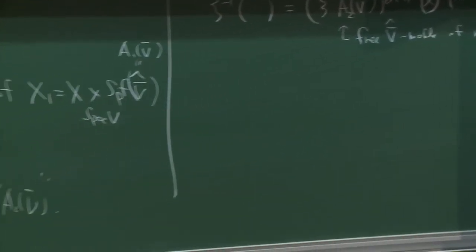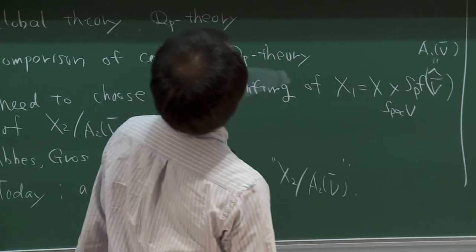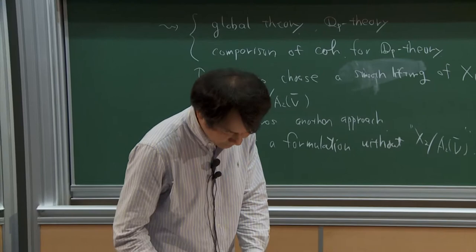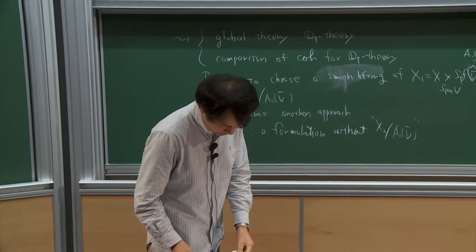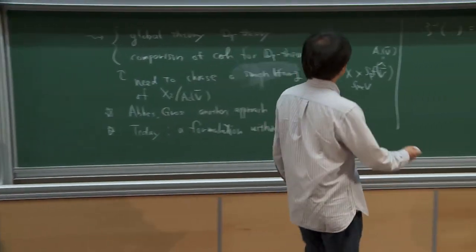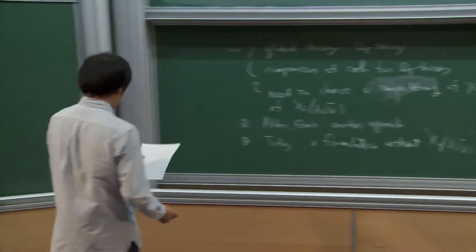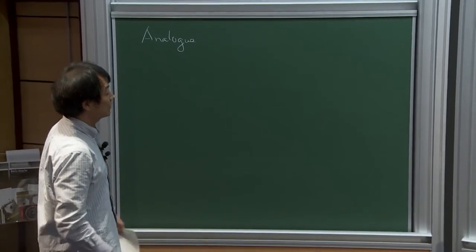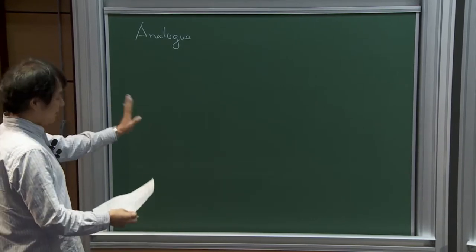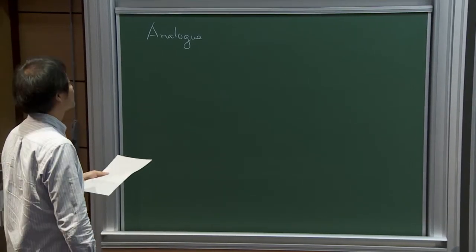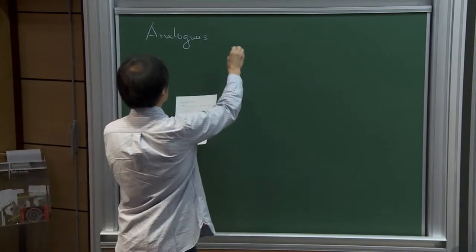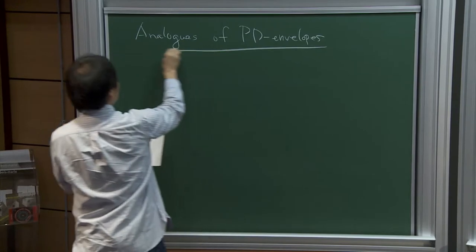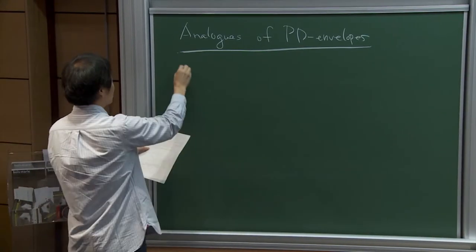Now I will explain first the definition of Higgs crystals, or Higgs isocrystals, and then explain how Faltings' theory is interpreted in terms of Higgs crystals. Crystals are of course defined using a certain PD thickening, and PD envelopes play an important role. So I first explain what the analog of PD envelopes is for the Higgs field.